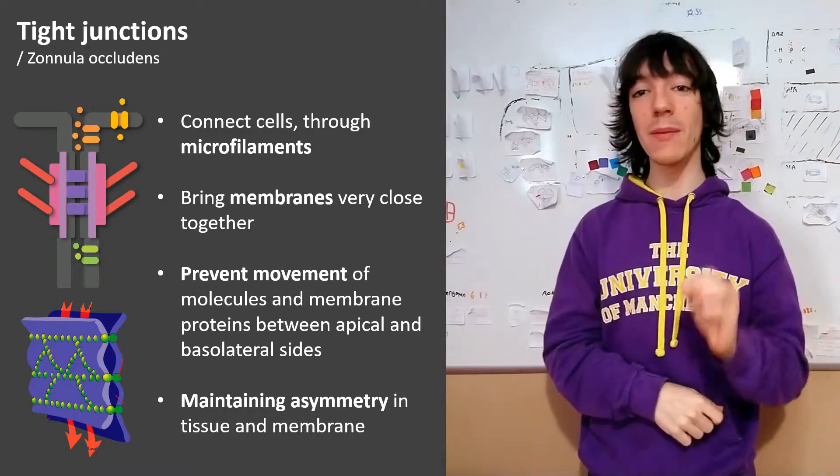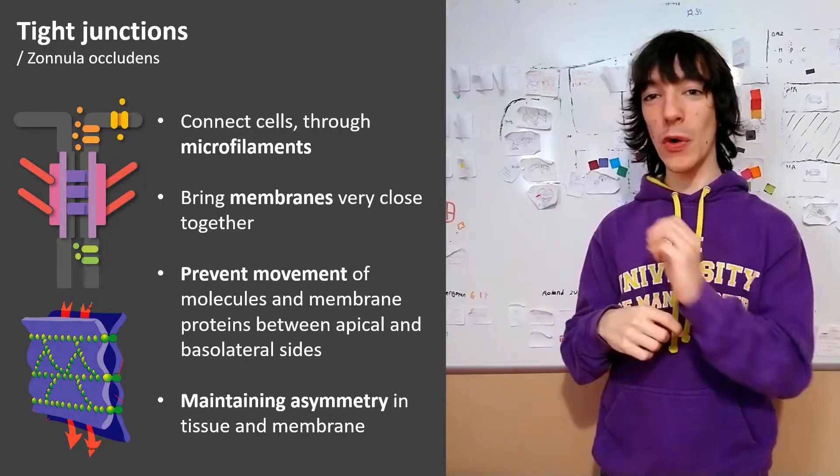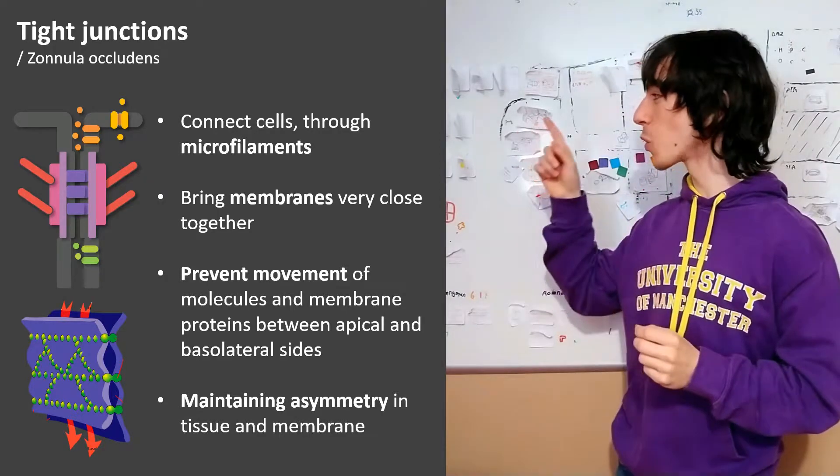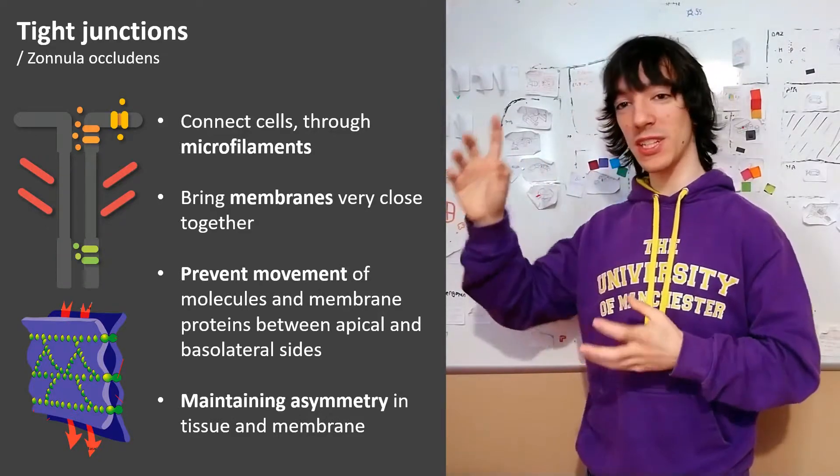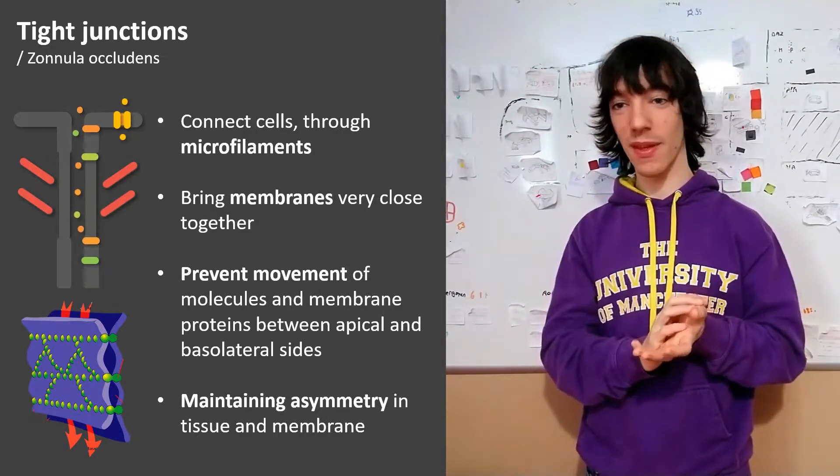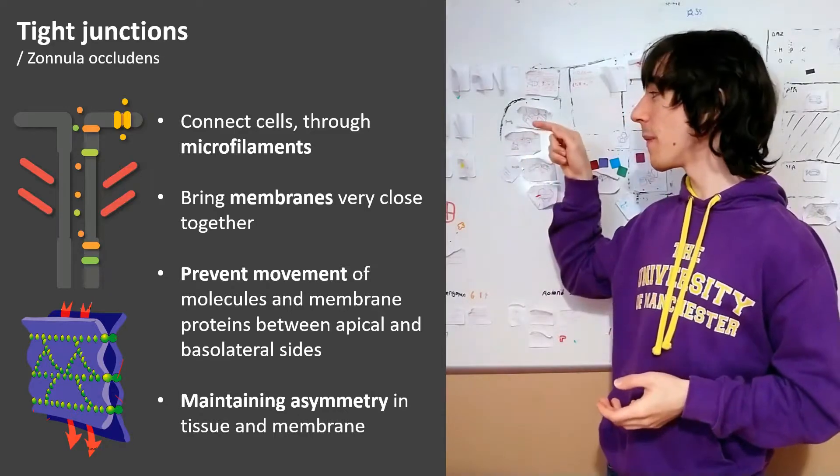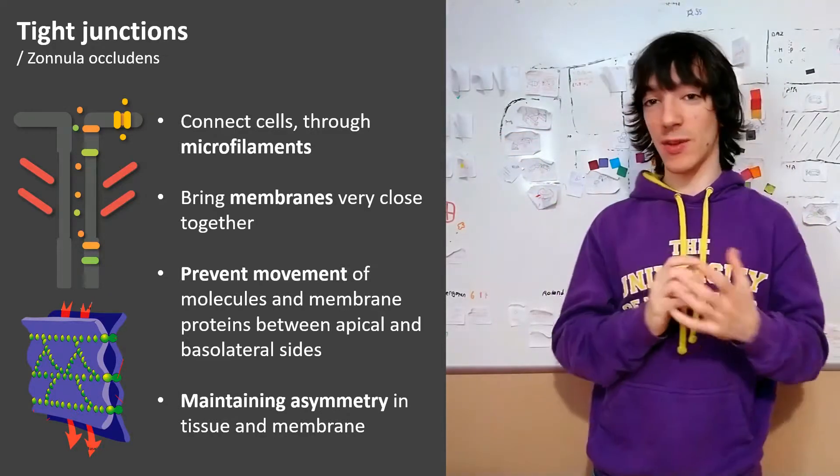Tight junctions enable transcytosis because they block the movement of those orange proteins. If there weren't any tight junctions, those proteins would mix up over time. The same would happen with the membrane proteins, for example, the transporters.